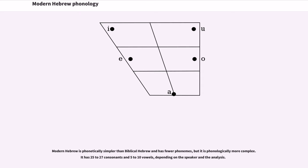Modern Hebrew Phonology. Modern Hebrew is phonetically simpler than Biblical Hebrew and has fewer phonemes, but it is phonologically more complex. It has 25 to 27 consonants and 5 to 10 vowels, depending on the speaker and the analysis.